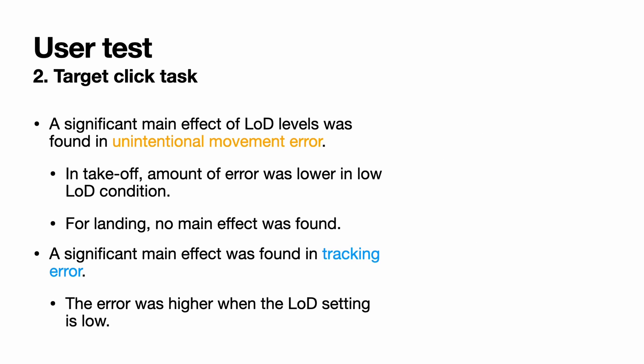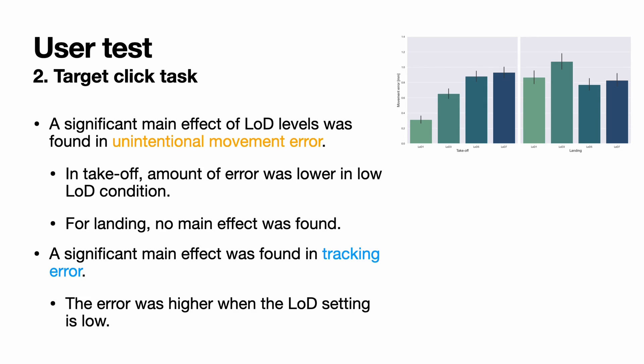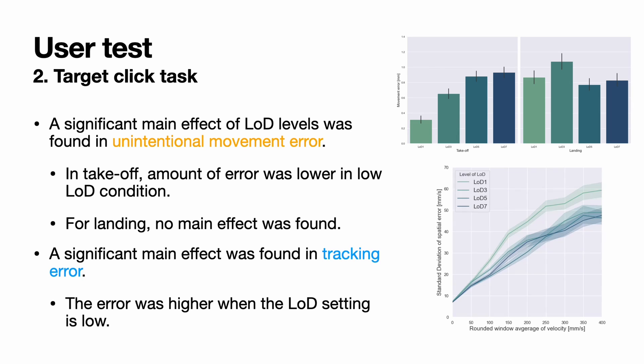In the next experiment, we measured the amount of unintentional movement errors and tracking error quantitatively. A significant main effect of LOD levels was found in unintentional movement error. In takeoff phenomena, the amount of error was lower in the low LOD condition. However, for landing, no main effect was found. Also, a significant main effect was found in tracking error — the error was higher when the LOD setting is low.